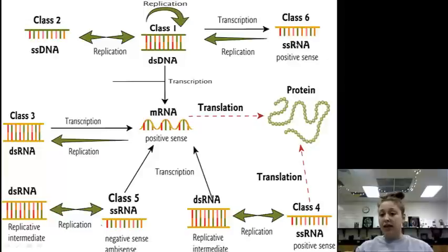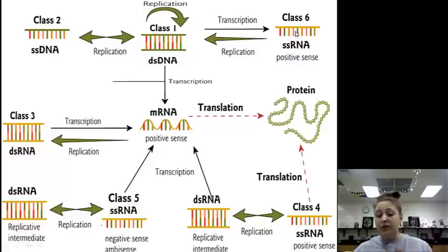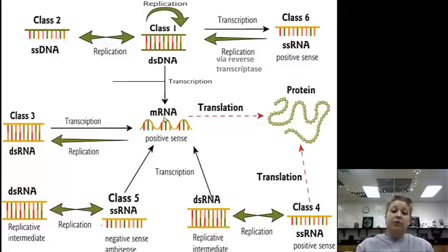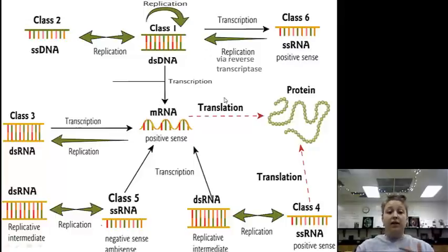Class 6 is another type of single-stranded RNA. These are very different because they don't just stick around as RNA — they actually use reverse transcriptase to create DNA, and then use the DNA to create more mRNA, then translation, then protein. So again, this positive-sense RNA does not go straight through translation. It uses reverse transcriptase to go to DNA, then DNA back to RNA, then RNA to protein.